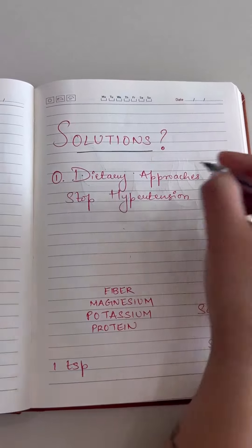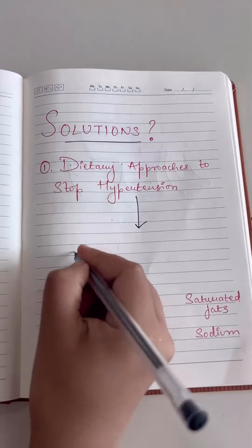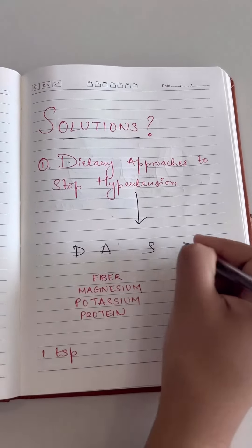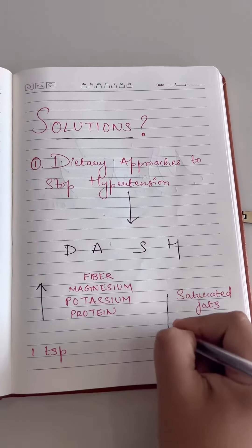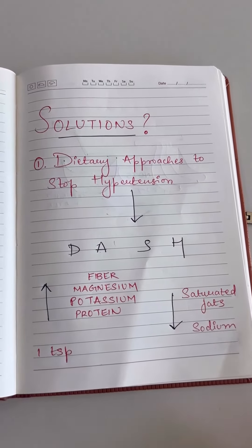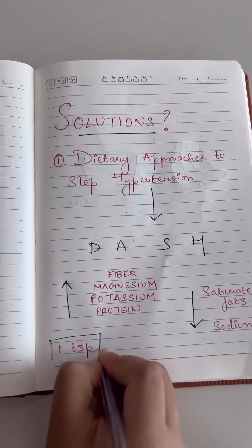Dash diet. It is also called dietary approaches to stop hypertension which focuses on foods that are rich in potassium and reducing the amount of saturated fats and sodium. In short, keep your salt intake to 1 teaspoon per day.